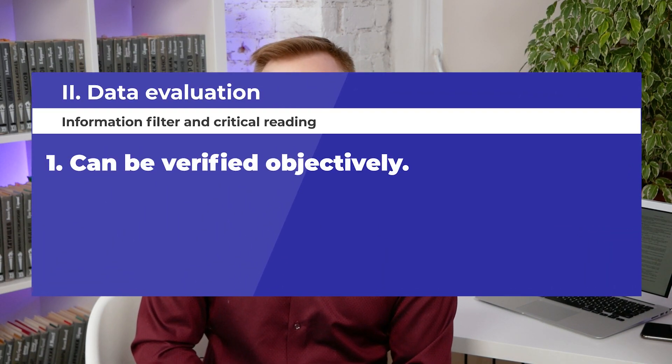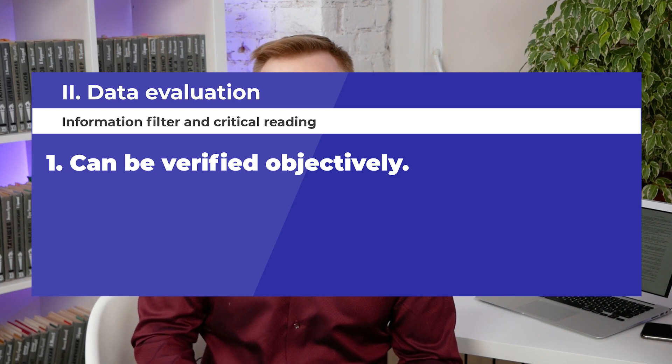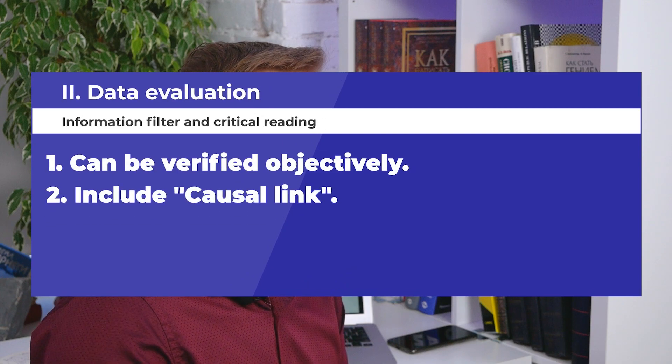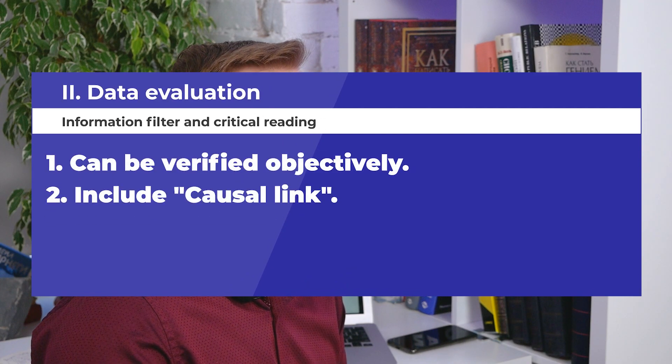The second group is data evaluation. The first point here is objectivity — can the data be verified objectively? There shouldn't be any emotions, personal opinions, declarations, slogans, dramatizations, or abuses. All these elements make the data subjective and unverifiable. The second point is whether the data includes the transformation of a situation into detailed actions. In other words, is the piece of information source material with a causal link or not?